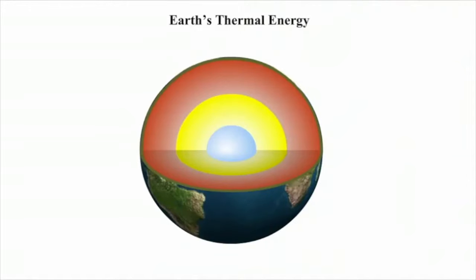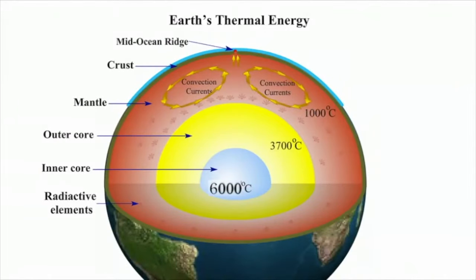Earth has its own sources of thermal energy, too. The center of the Earth is at a temperature of about 6,000 degrees Celsius. There are a number of sources of Earth's internal energy. The main source is radioactive elements and isotopes in Earth's core, mantle, and crust.